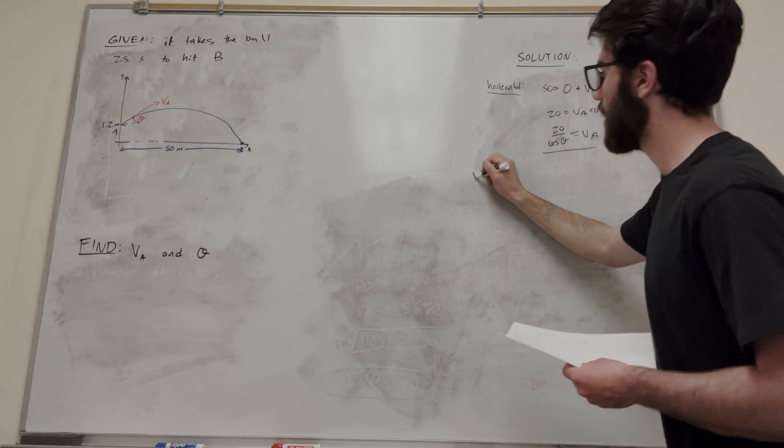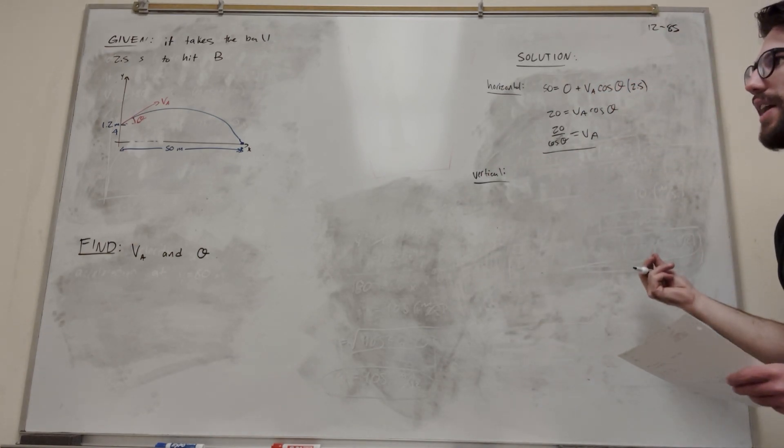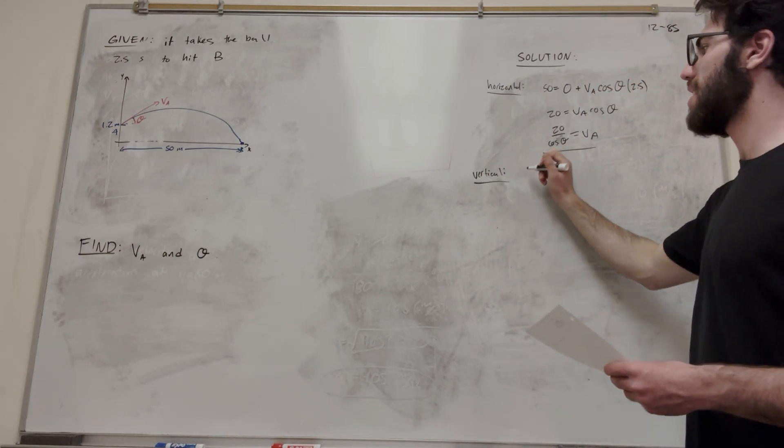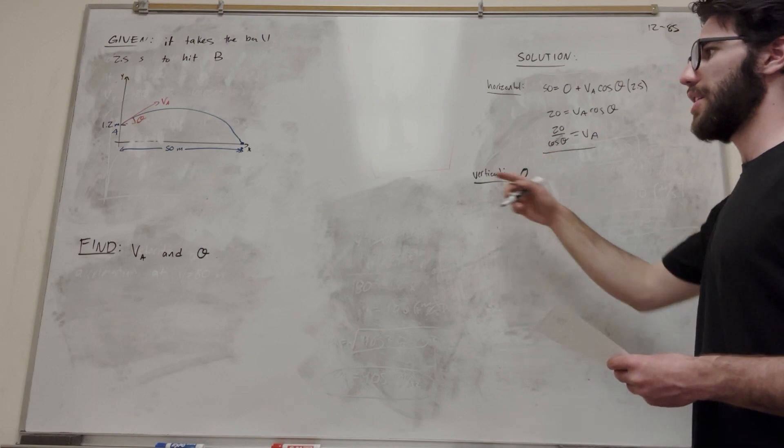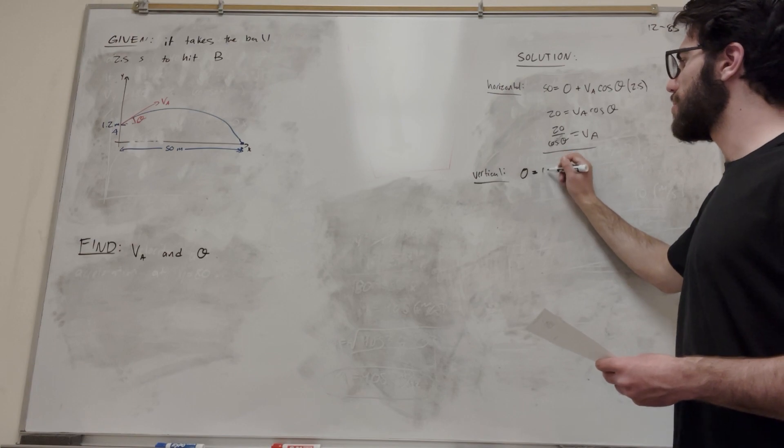So this is our first equation. Now let's go to the vertical side. So vertical, we're going to do y-final this time. So y-final is zero, right? We land at zero meters. So that's going to be equal to y-initial, 1.2.